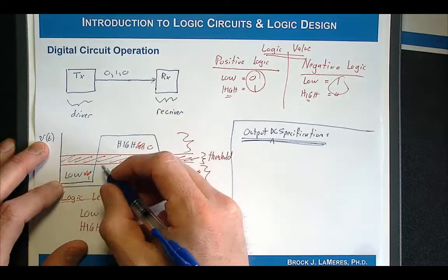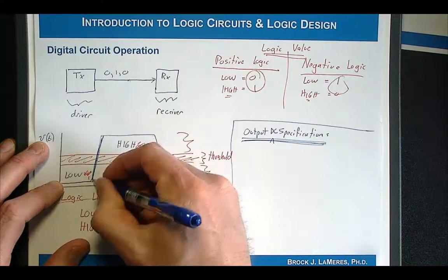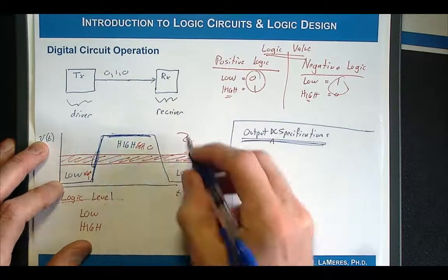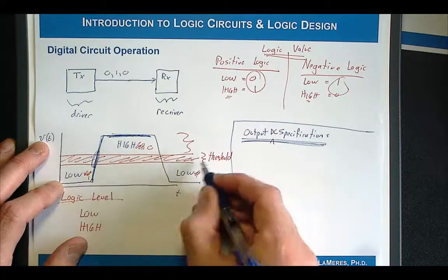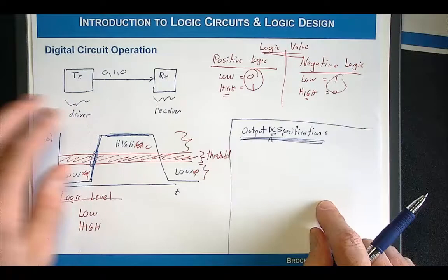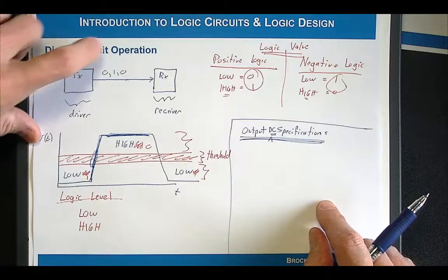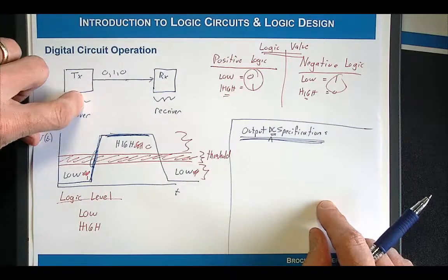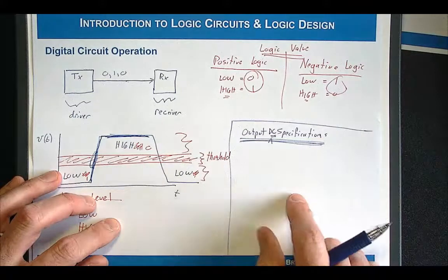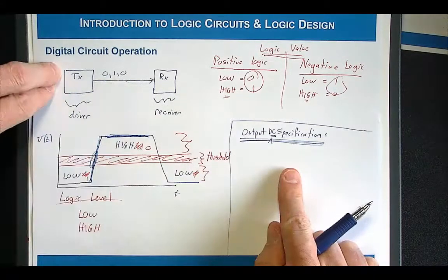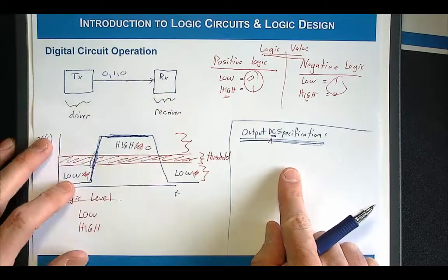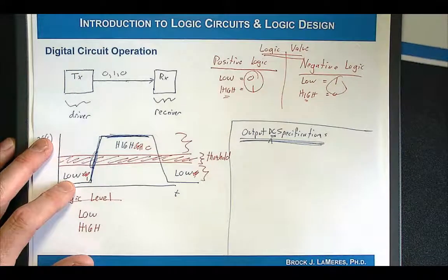We're not worried about the transition region where you move from a low to a high — we're worried about once you're in a stable, steady-state condition. We simply care whether the electrical signal is above or below the switching threshold. What we want to do is create digital circuits that are guaranteed: when you output a 1, the receiving circuit can interpret it as a 1, and when you output a 0, the receiving circuit can interpret it as a 0. That's what these DC output specifications will define.